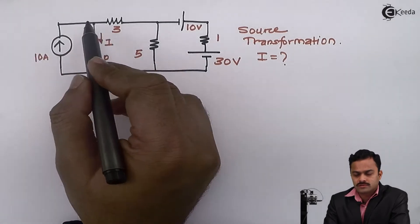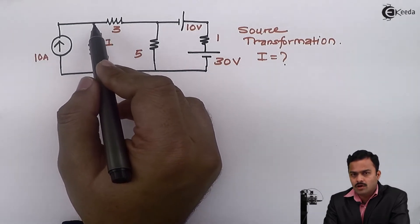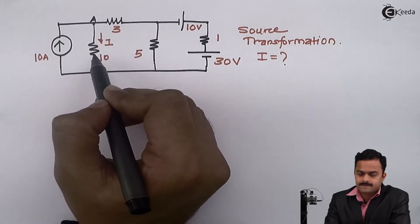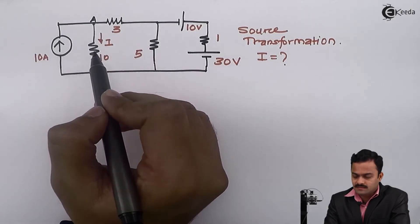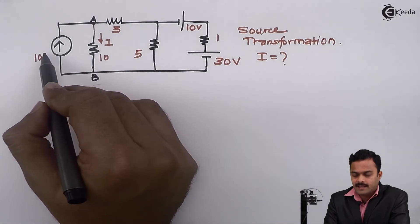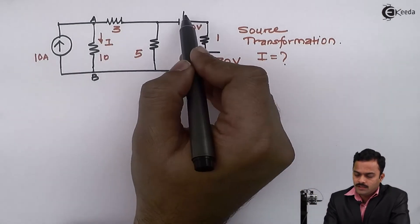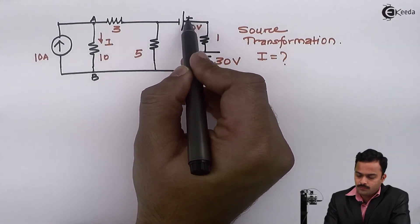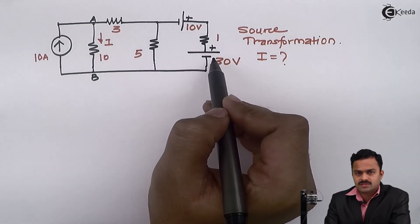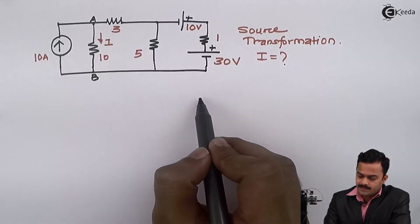If I consider this current source for transformation, the 10 ohm resistor's orientation would be lost. I want this resistor value to remain as it is till the last step, so I cannot touch it — meaning I cannot convert this 10 ampere source. Looking at the left part, the positive polarity of one voltage source is connected to the positive polarity of the other, so these two voltage sources are in series opposition.